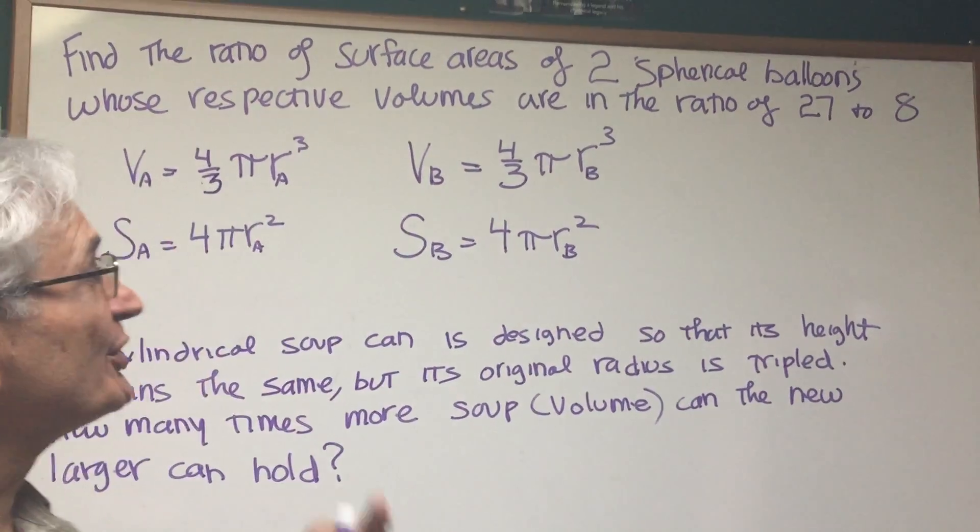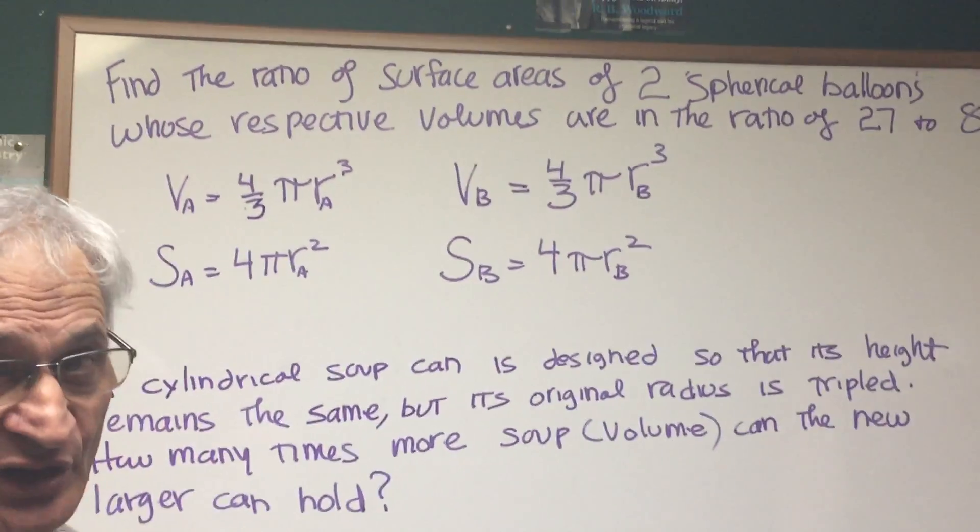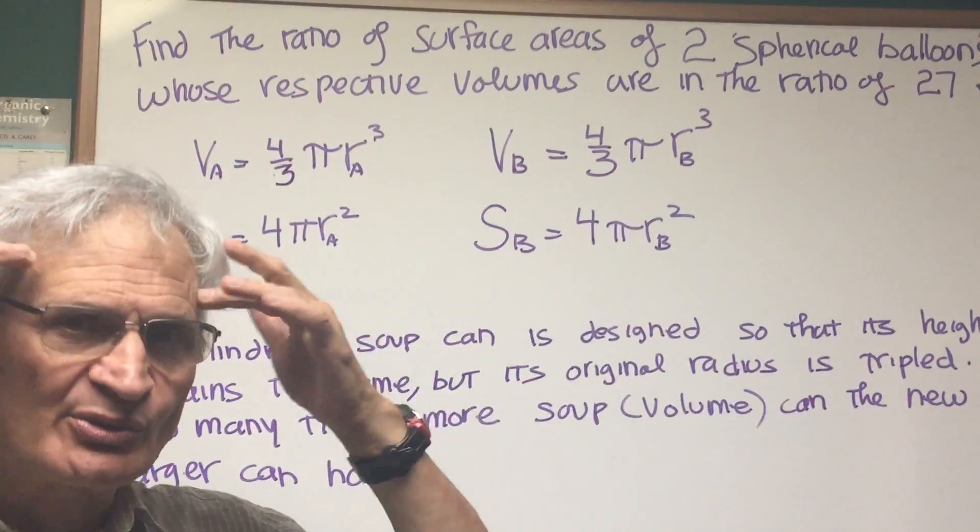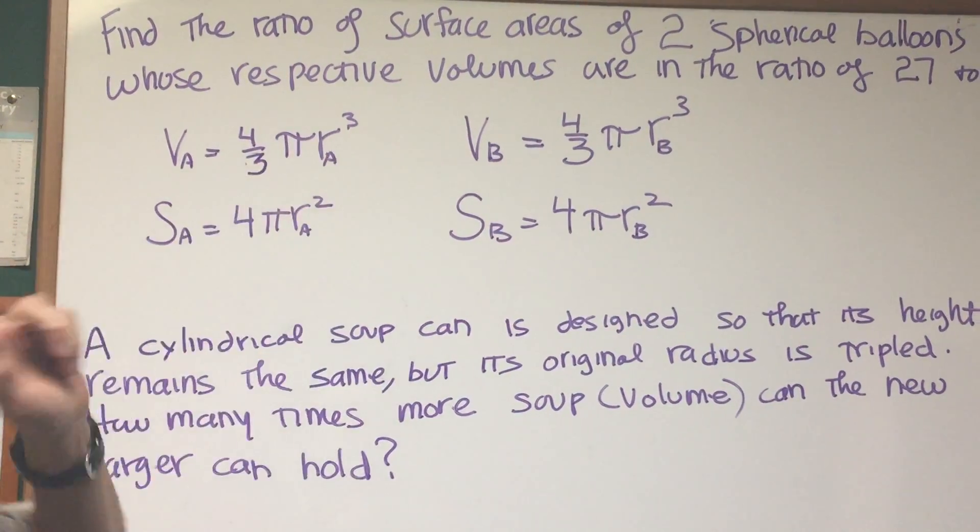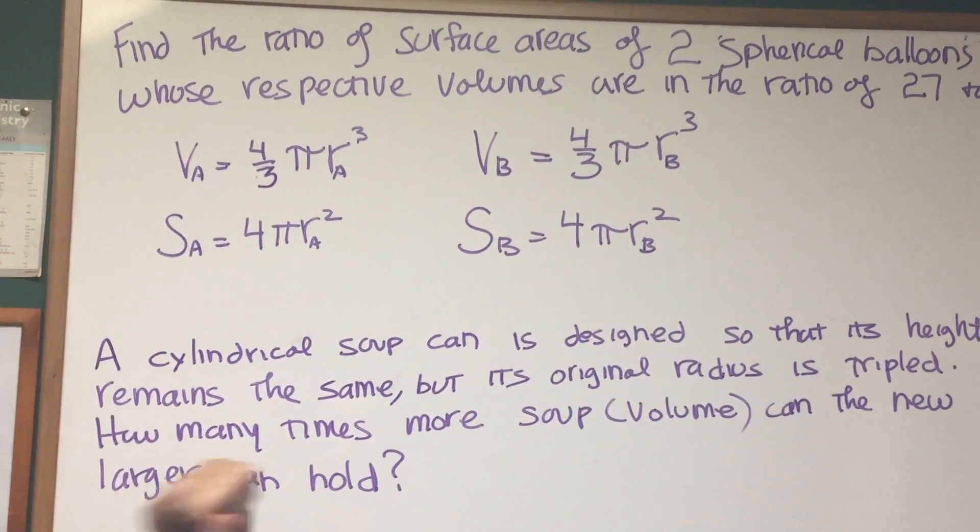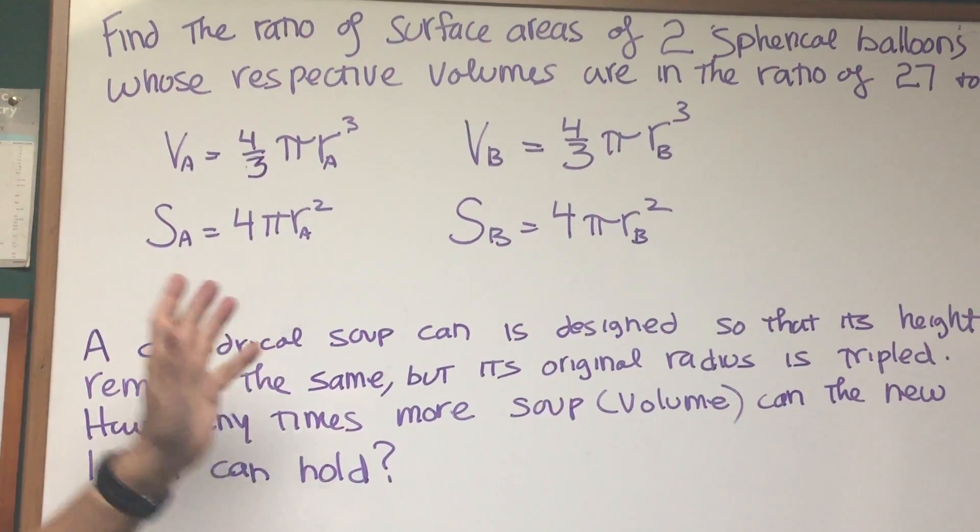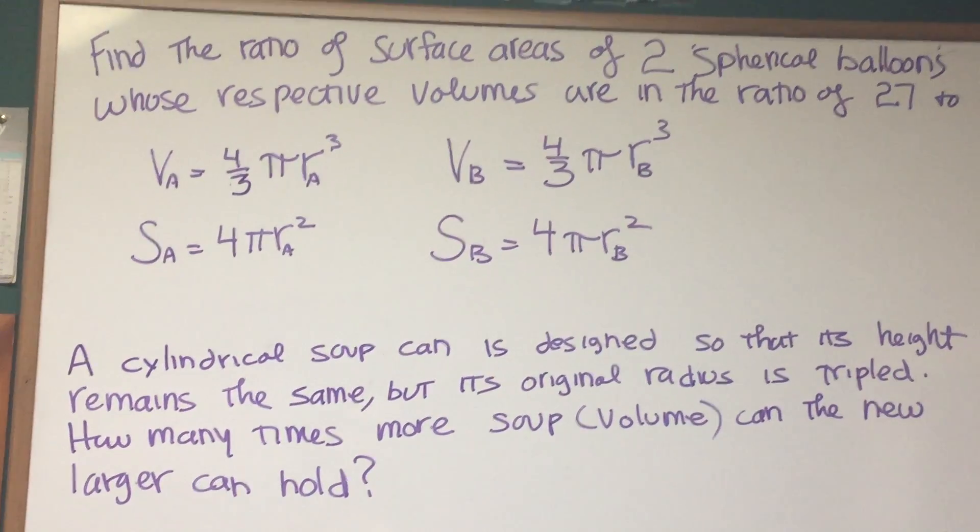Now before we even begin the problem, we should know what the formula for the volume of a sphere is and the surface area of a sphere. Volume of a sphere, you should just put that away in your math reference formulas: 4/3πr³. And the surface area of a sphere is 4πr², which means it's 4 times the area of a circle of the same radius.